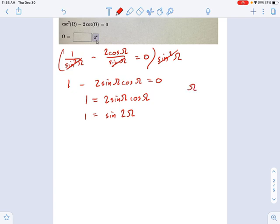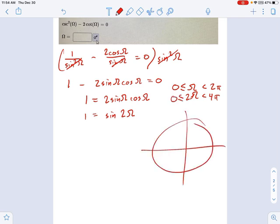Remember, omega needs to be between two pi and zero. Okay, which means two omega, two omega is going to be between four pi and zero. Meaning, on our unit circle, the sine of some angle equals one. That's only going to be right here at the top.